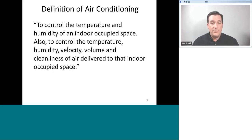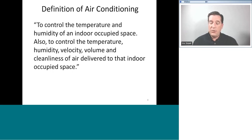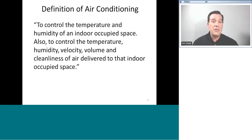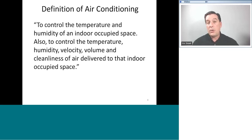This brings us to what is air conditioning. The definition of air conditioning is to control the temperature and humidity of an indoor occupied space. Another definition is to control the temperature, humidity, velocity, and cleanliness — and the volume — of the air delivered to that indoor space. It depends on how we're thinking about it: if we're thinking about the airstream and its conditions, that's temperature, humidity, velocity, and cleanliness. If we're talking about the conditions of the occupied space itself, we're talking about temperature and humidity. In order to control temperature and humidity, we need to move energy out of the air — that's what our air conditioning systems do.